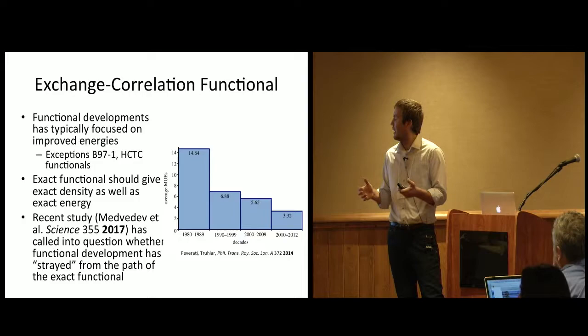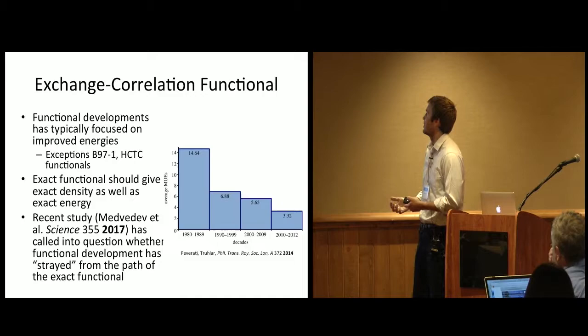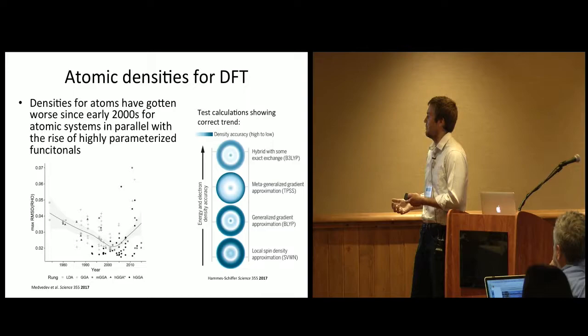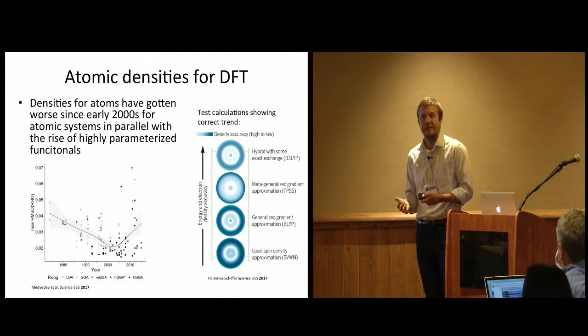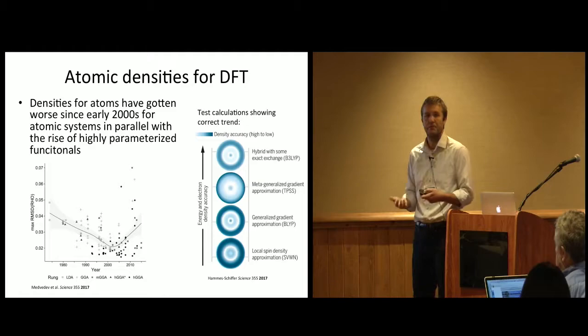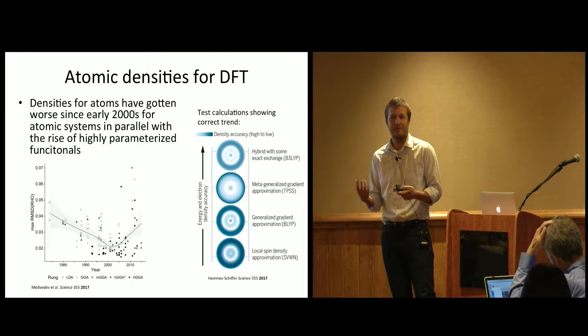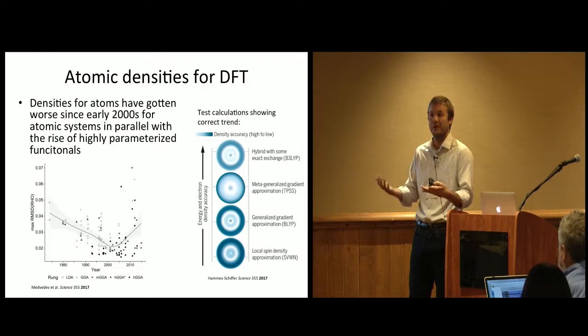So one idea of John Perdue, who was in this recent study in Science, looked at a bunch of functionals to see if they give good densities as well as energies, and he did not find that, and so he's called into question whether DFT has strayed from the path of trying to approximate the exact functional. Because in John Perdue's philosophy, we know we should be trying to approximate the exact functional, so we should be getting better densities and energies, not just energies. The way they did that was they looked at atomic densities using DFT, and they showed that up into the year 2000, atomic densities got better, but then starting in the year 2000 with the rise of these highly parameterized functionals, densities started getting worse. The Minnesota functionals really started in 2005, and so there are a lot of these functionals over here that give very poor atomic densities.